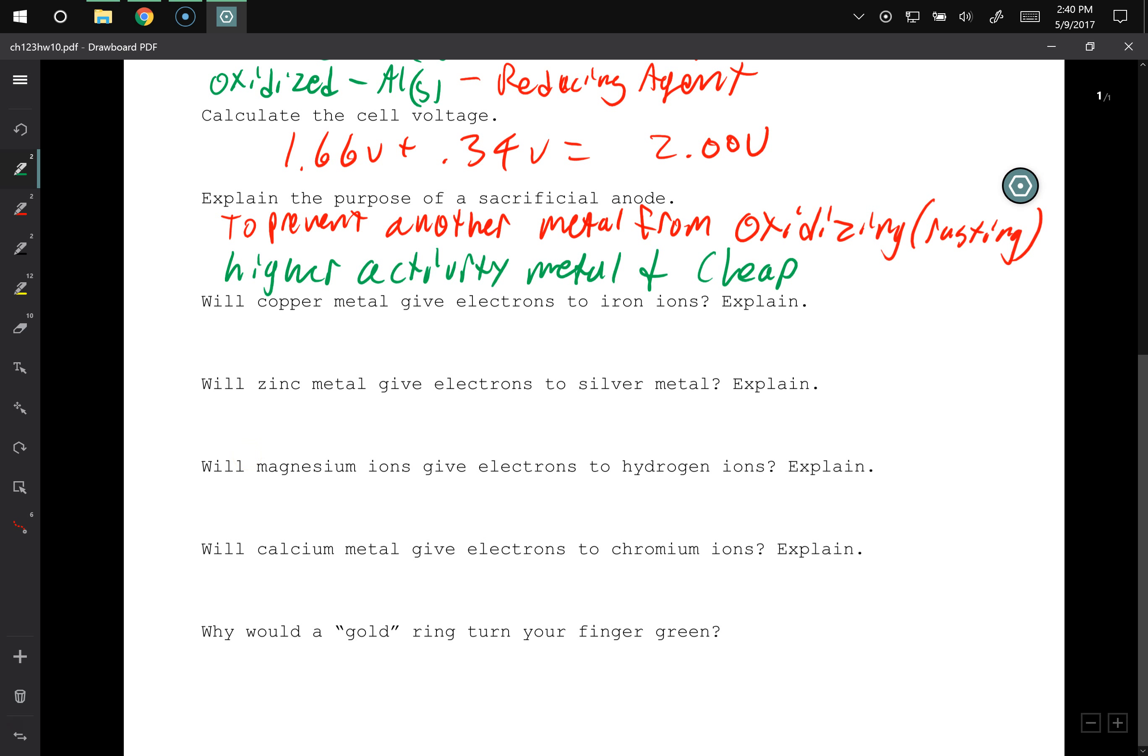Will copper metal give electrons to iron metal? Or iron ions. So I've got some copper, and I've got some iron. I don't know, say plus 3. Will this happen? It will not. Why will this not happen? Iron's higher on the list, so it would give electrons, but it won't accept electrons from the copper without... I should have said spontaneously. I mean, you can make this happen if you put electricity into it, but spontaneously this will not happen.